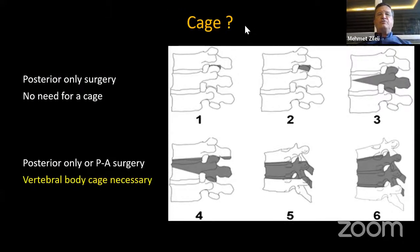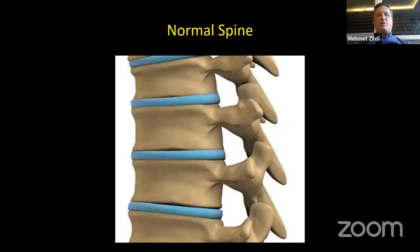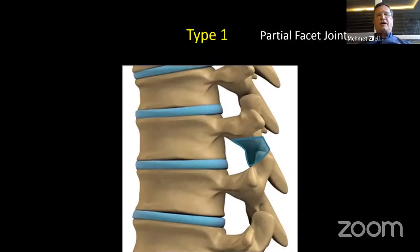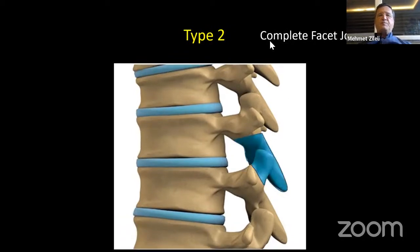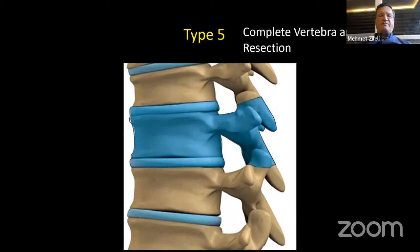The old terminology — Smith-Petersen osteotomy, Ponte osteotomy, and pedicle subtraction osteotomy — can be accepted as grades 1, 2, and 3. For grades 1, 2, and 3, you do not need any cage. However, if you resect the whole vertebra together with the disc — grades 4, 5, and 6 — then you need a vertebral body cage ventrally. These are some illustrations: type 1 is a partial facet resection, type 2 is a complete facet resection, type 3 is pedicle subtraction osteotomy with pedicle and partial body resection.